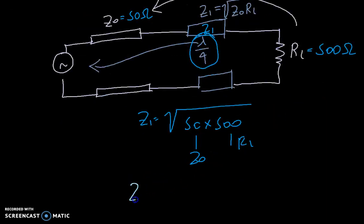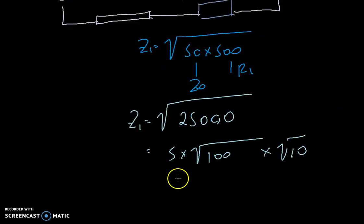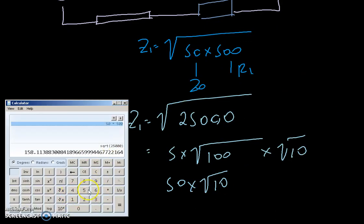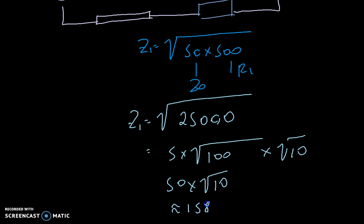So Z1 is equal to the square root of 25,000, and if we take the square root of that, this is going to be equal to 5 times the square root of 100 times the square root of 10, which is equal to the square root of 10 times 50, which is about 158.11 ohms — that is the impedance Z1 of the new transmission line.